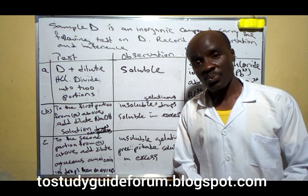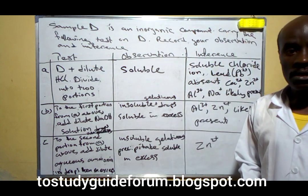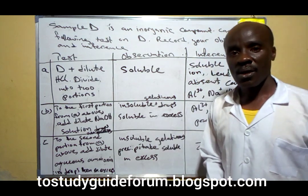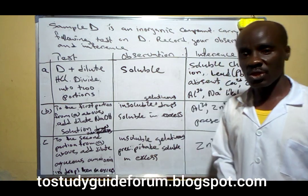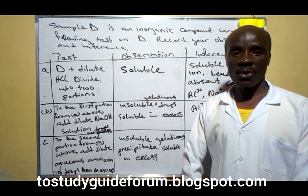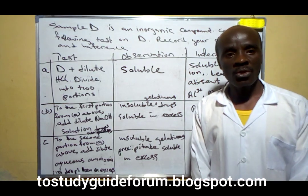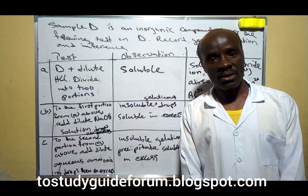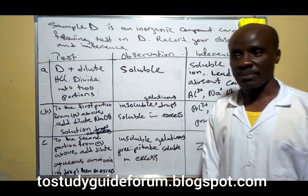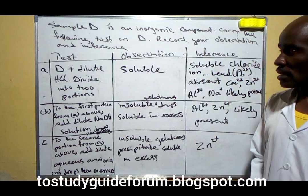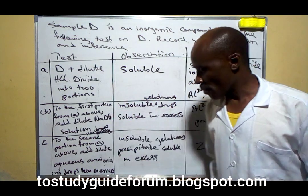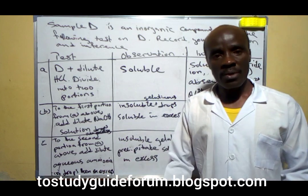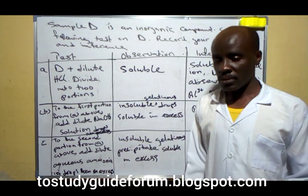Another thing about zinc compounds: on heating zinc oxide, it turns yellow when very hot, and white when it is cold. Most zinc compounds are white powder, and some of them might be crystals — most are white crystals or white powder. So with both dilute sodium hydroxide and aqueous ammonia, we've been able to find out how to identify zinc ion.